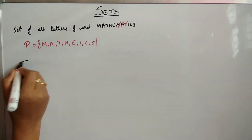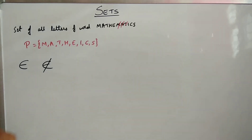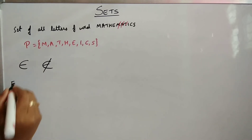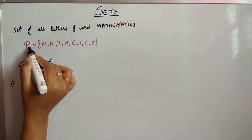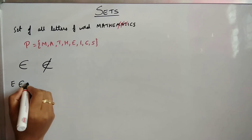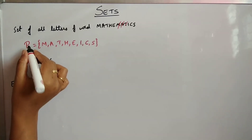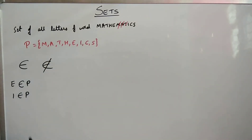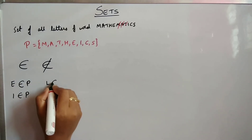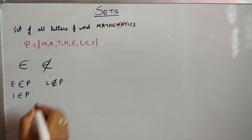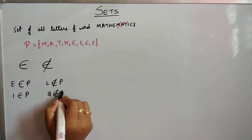Next we have the concept of 'belongs to' and 'does not belong to'. If I consider element E — E is present in set P, so we say E belongs to set P, written as E ∈ P. Similarly, I belongs to set P. Consider letter L — L is not present in set P, so L does not belong to set P. Consider letter Q — Q is not present in set P, so Q does not belong to set P.